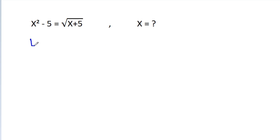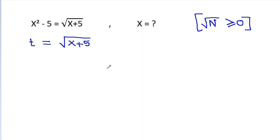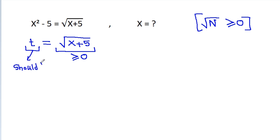Suppose t is equal to the square root of x plus 5. Now, the square root of any number n is greater than or equal to 0. So, the square root of x plus 5 will be greater than or equal to 0, which means t must be greater than or equal to 0.